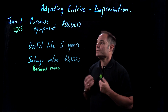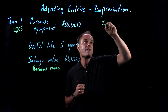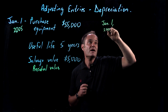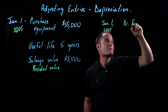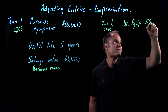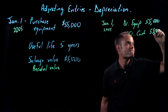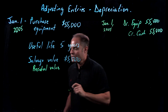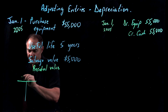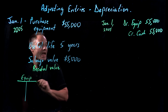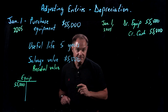Instead, what we do is use something called depreciation. On January 1st, 2005, they purchased the equipment, so we're going to debit Equipment — because our asset has increased — $55,000, and credit Cash. I'm assuming they paid cash. I'll set up a T-account for Equipment, and I debited Equipment $55,000, so I'll put that in here because that's going to go onto my balance sheet ultimately.